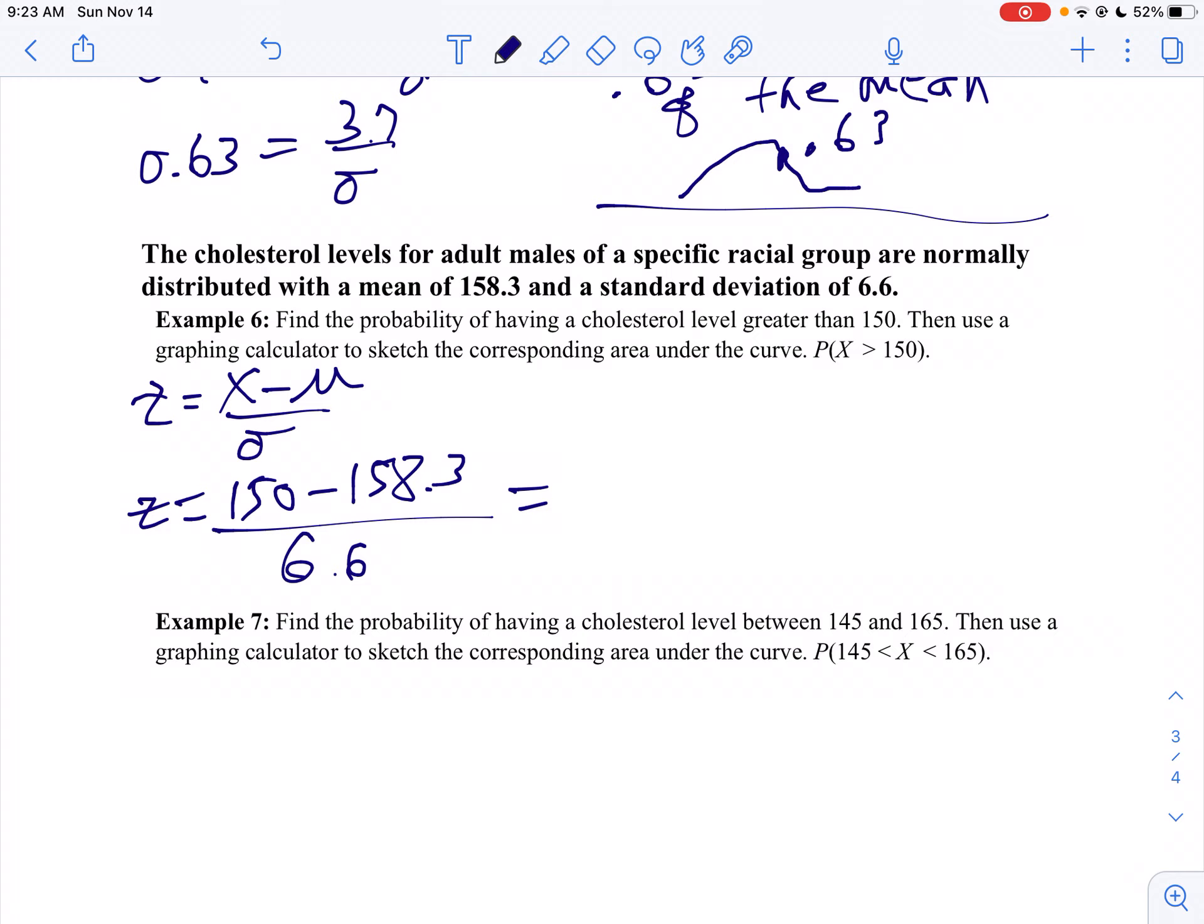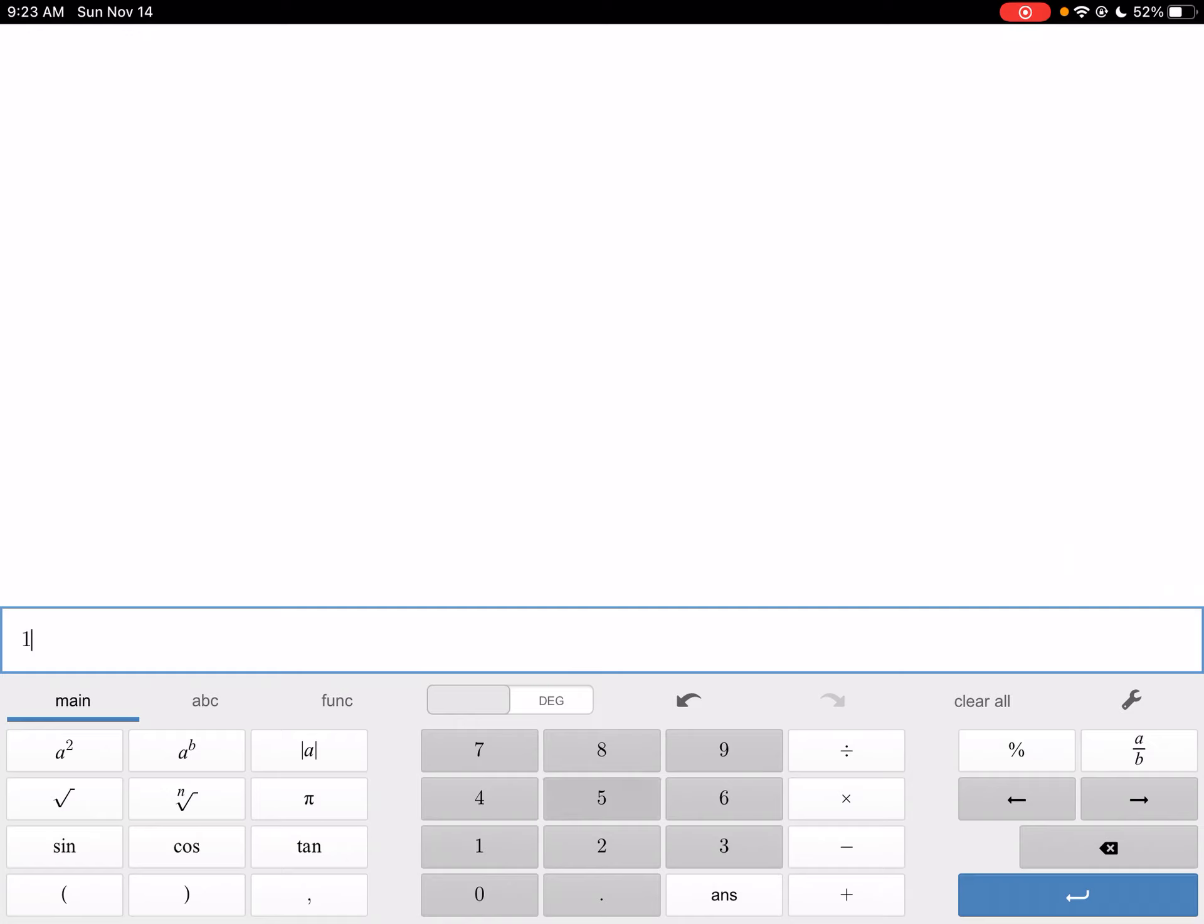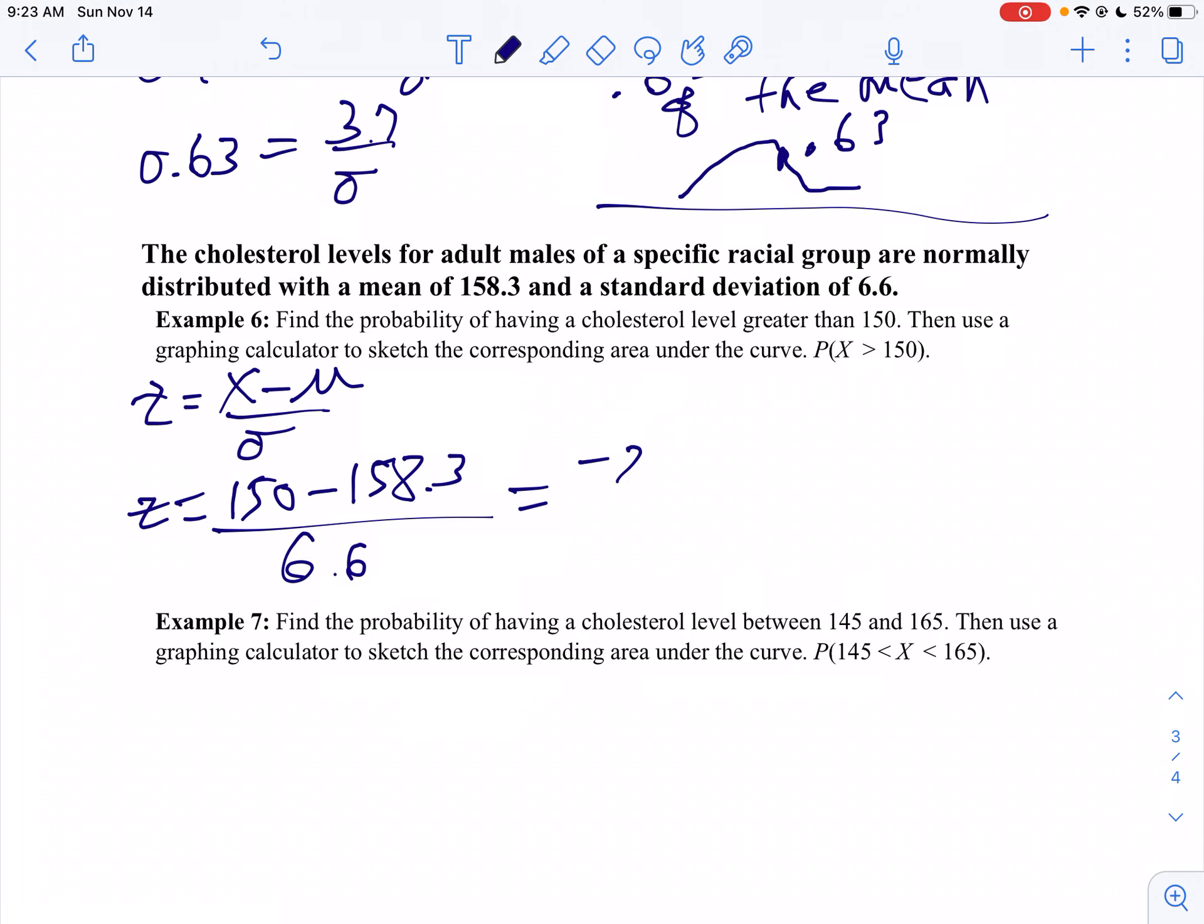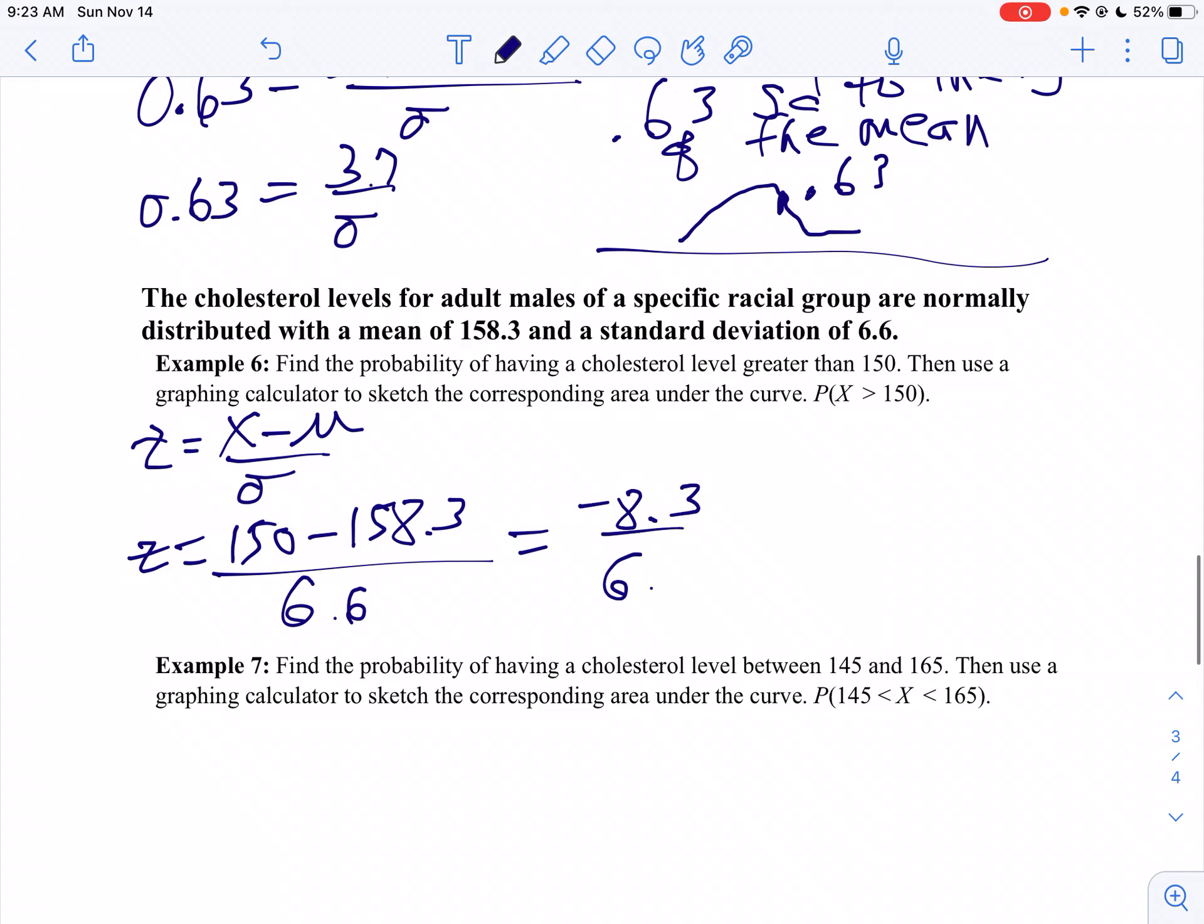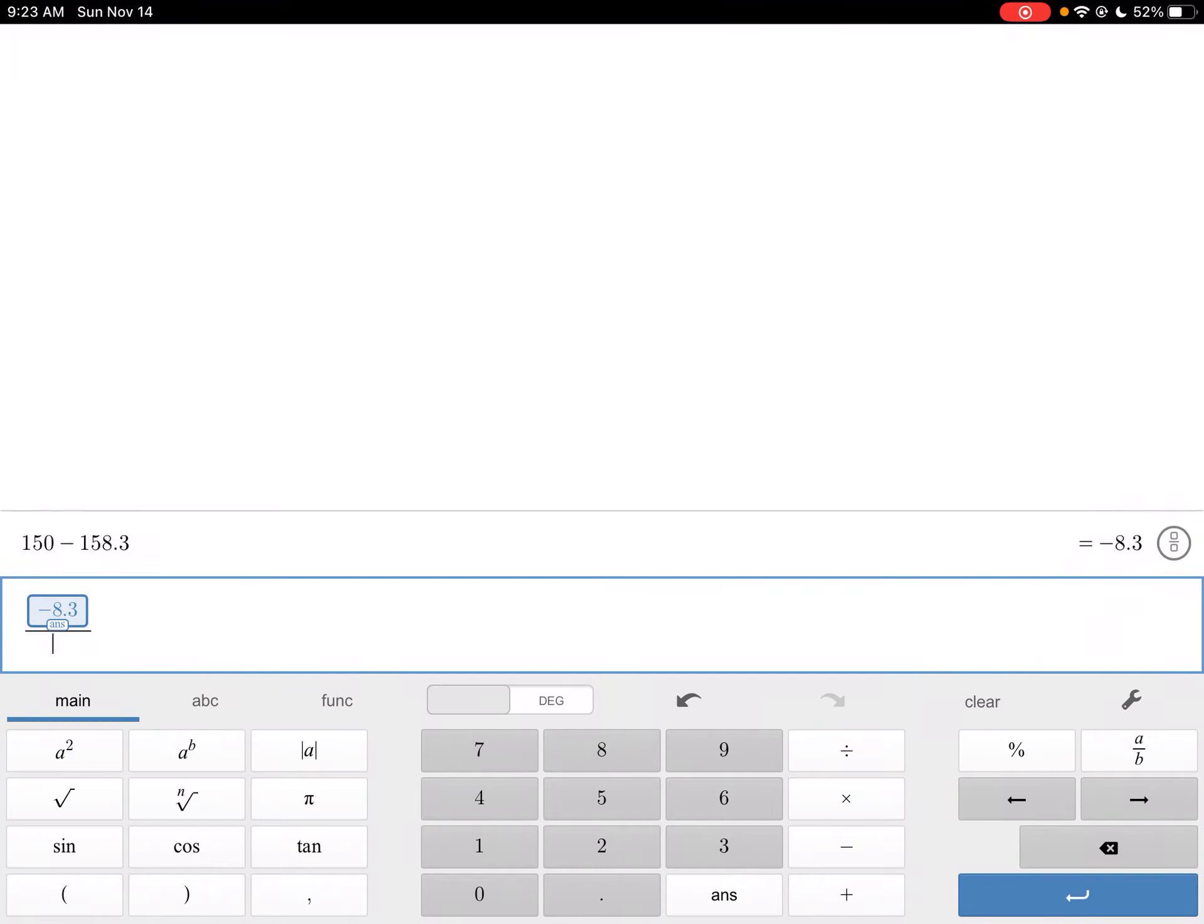So I'll do that. I'll take 150 minus 158.3 and I get negative 8.3, divided by 6.6. So if we take negative 8.3 divided by 6.6, we get a z-score of about negative 1.26.